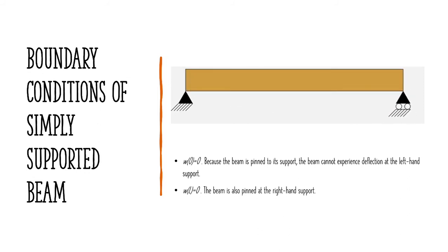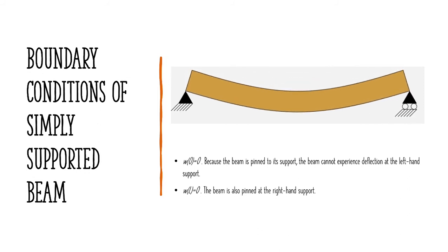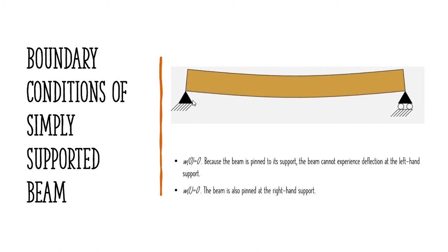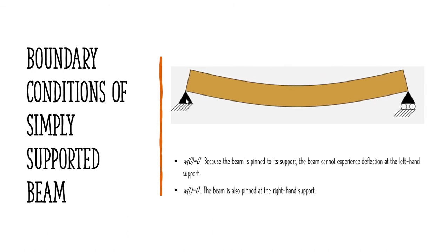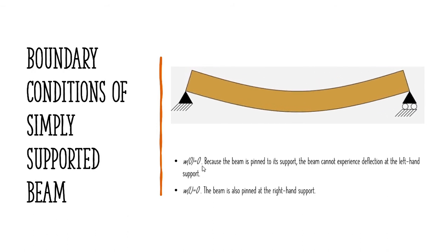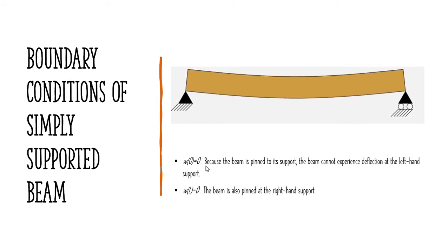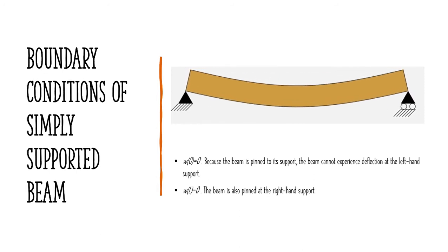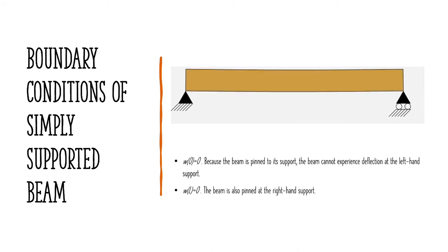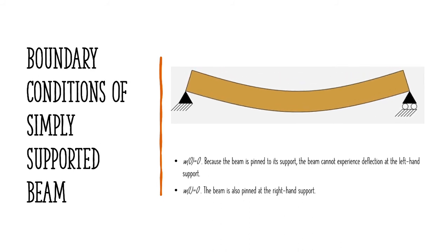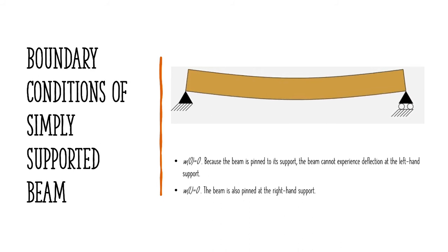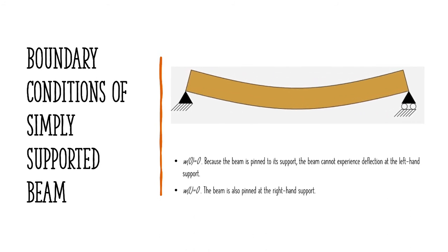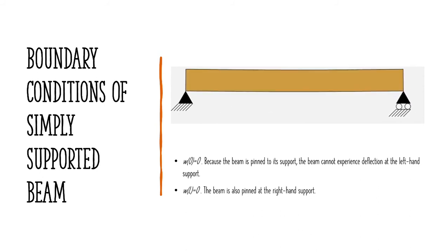We can give boundary conditions for a simply supported beam. At x equal to zero, the deflection is zero because the beam is pinned to its support and it doesn't undergo any deflection at the left-hand support. Similarly, at the maximum length of the beam, the beam is also pinned to the right-hand support, so there is also no deflection at that point.